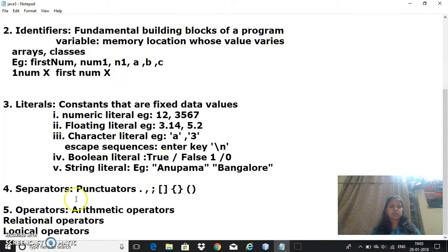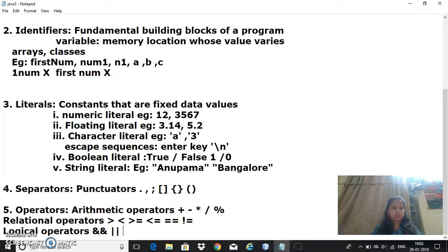Now we have different kinds of operators. These are the three main operators we have: arithmetic operators - addition, subtraction, multiplication, division, and modulus which gives the remainder. Under relational operators we have greater than, less than, greater than or equal to, less than or equal to, equal to, and not equal to - these are the different relational operators.